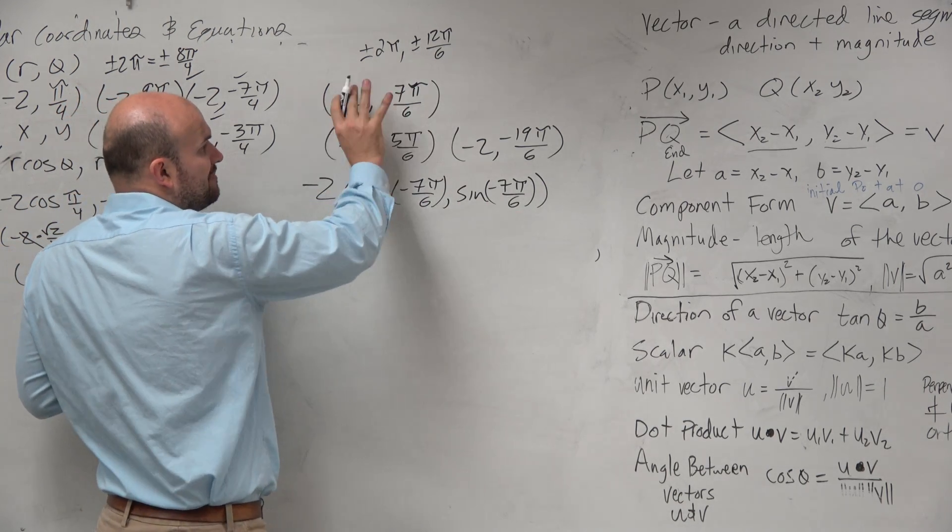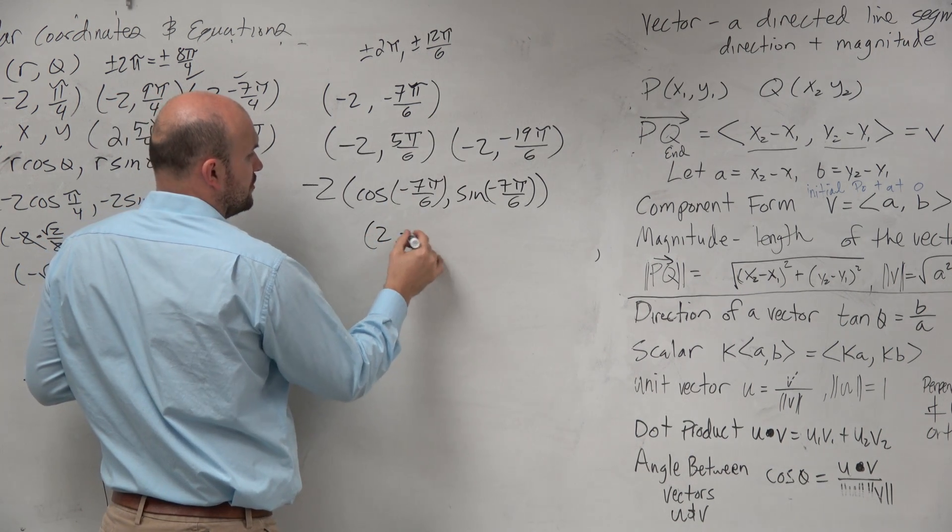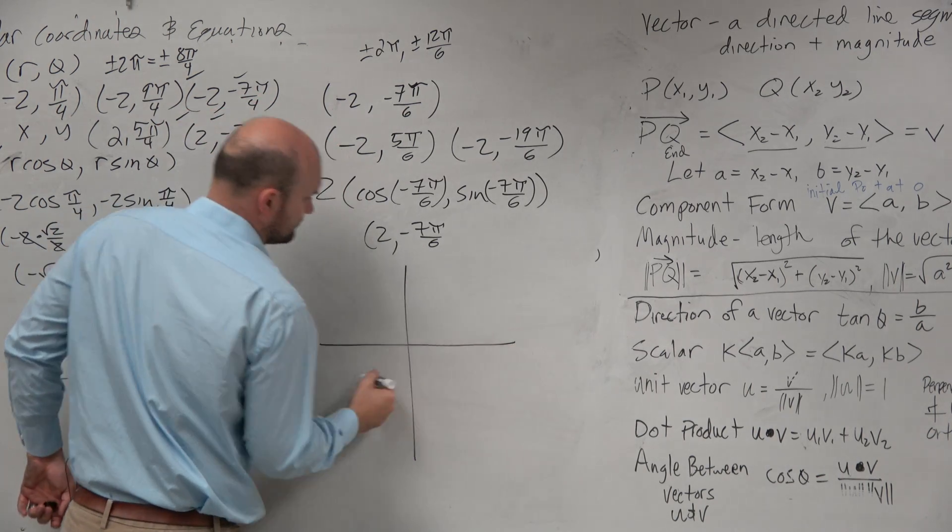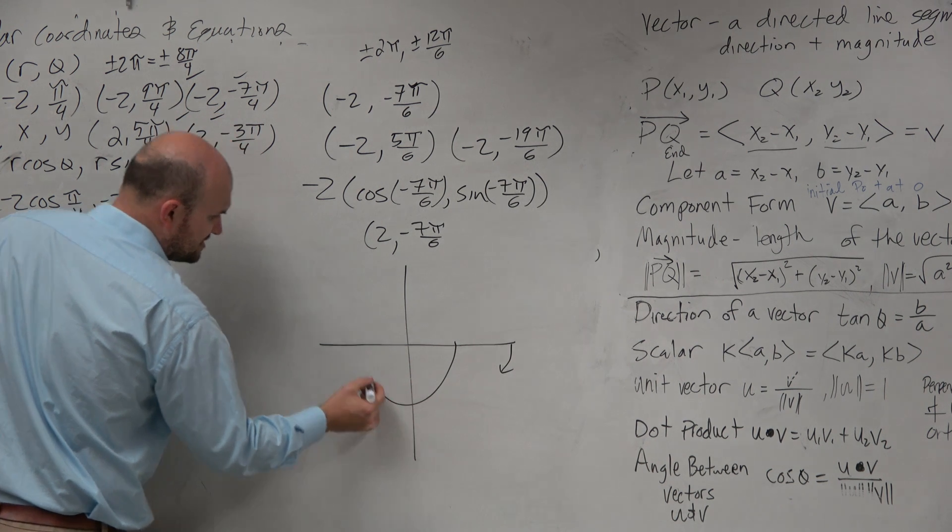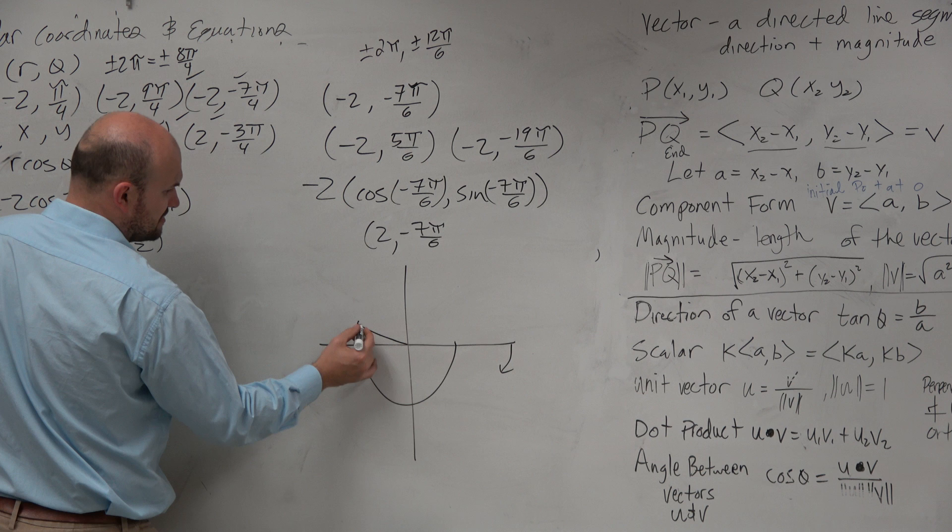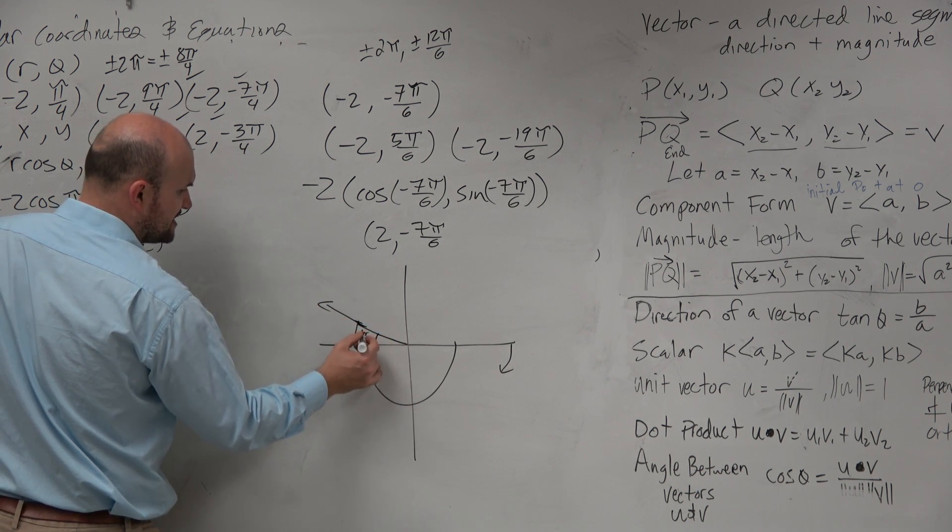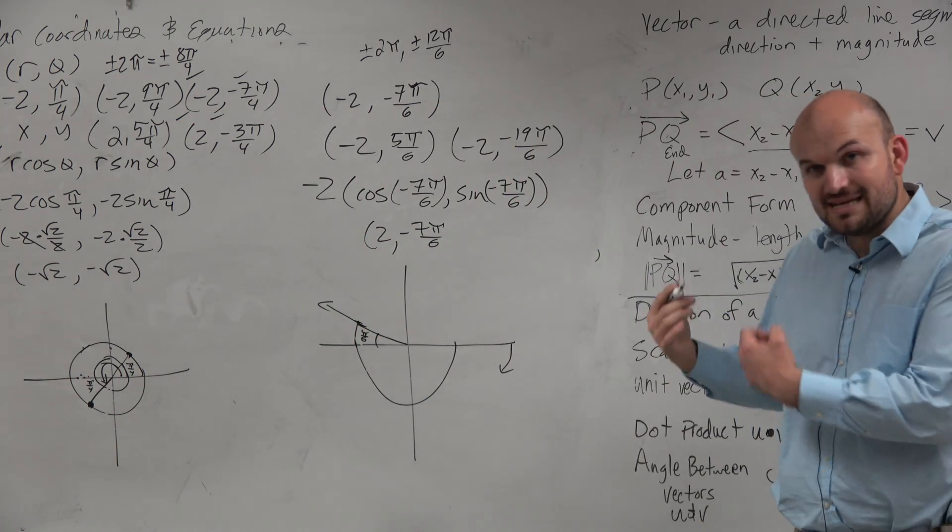Or another way is, if you guys just forget about the negative for a second, just graph 2 negative 7π over 6. So if I graph that angle, negative 7, so it's negative direction. Here's 6π over 6. So if I go one more, I'm at 7π over 6. So that's a reference angle of π over 6. I'm π over 6 away from my x-axis. But then think about it, guys.